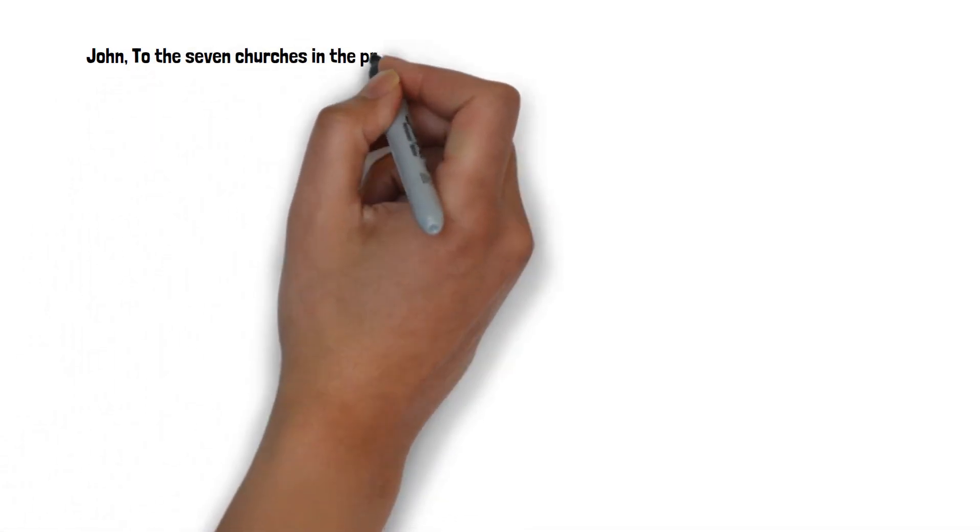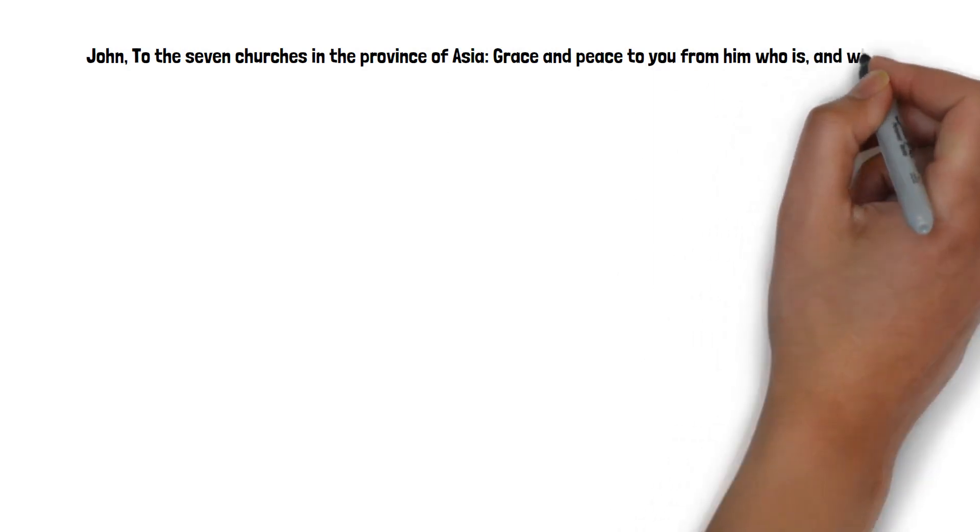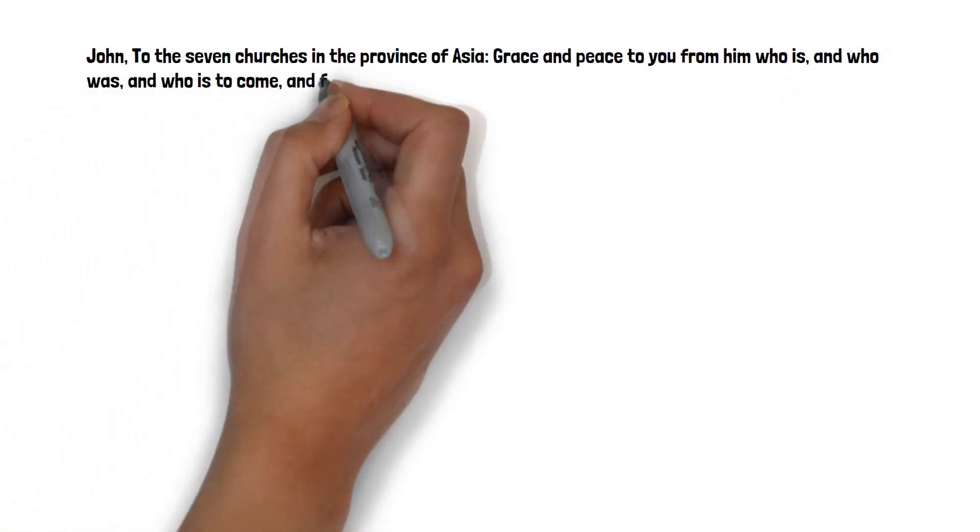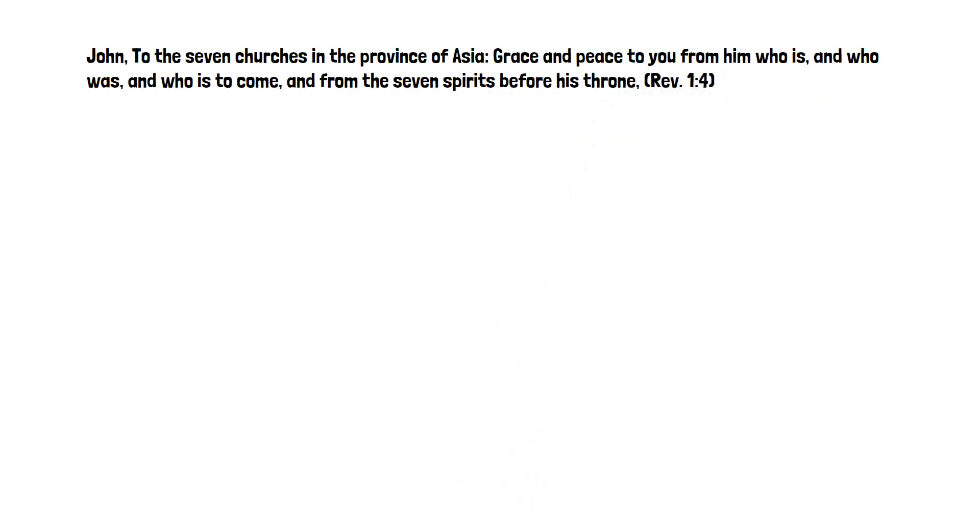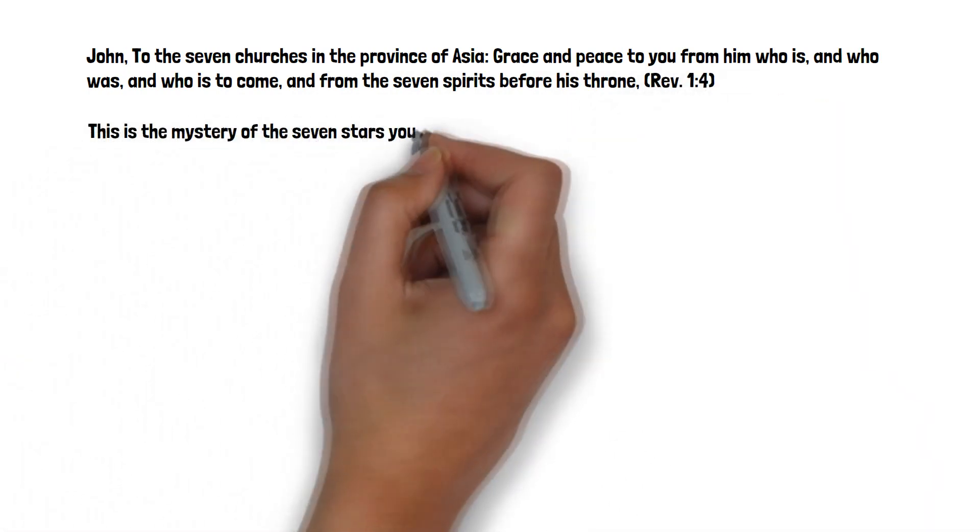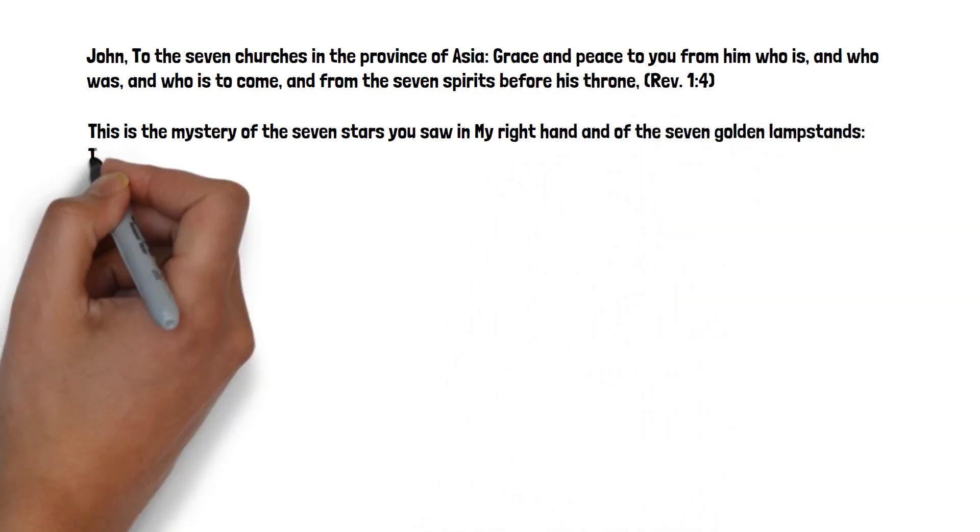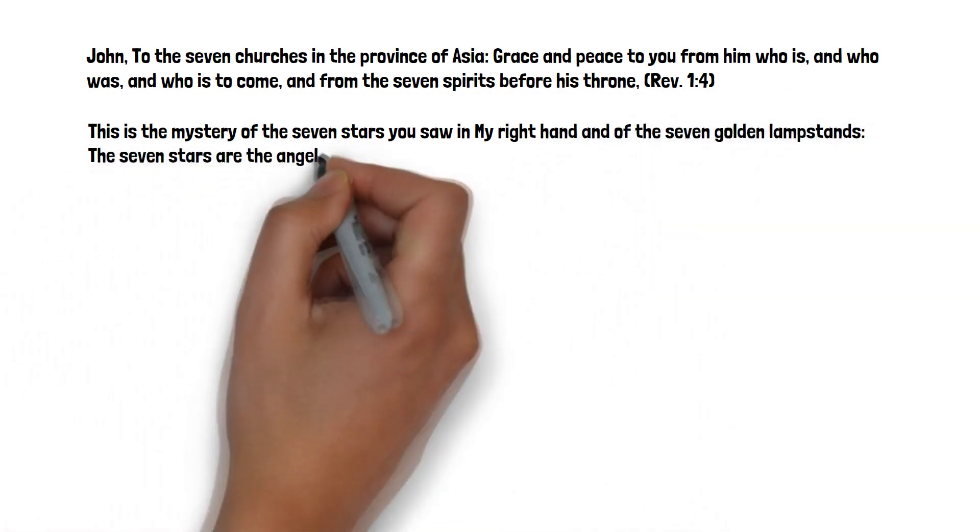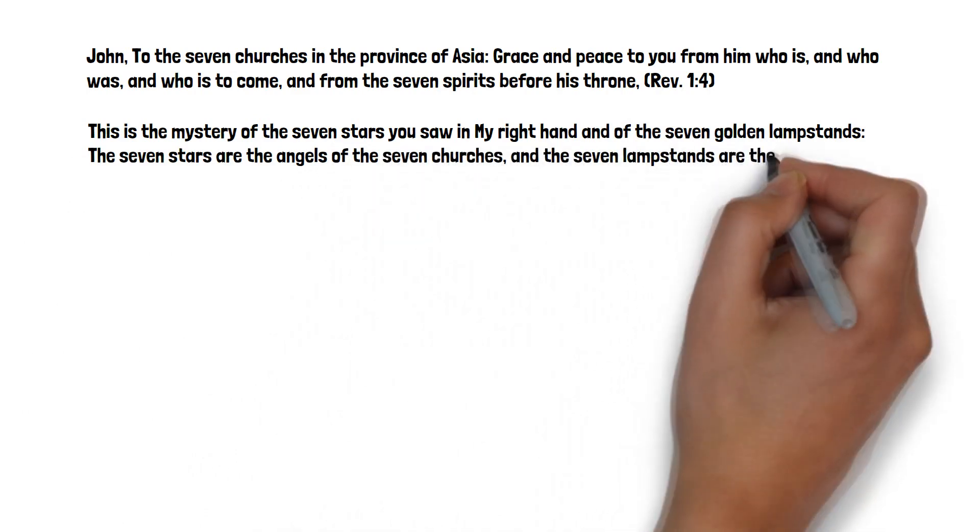Revelation 1:4 states: John, to the seven churches in the province of Asia, grace and peace to you from him who is and who was and who is to come, and from the seven spirits before his throne. Revelation 1:20 states: this is the mystery of the seven stars you saw in my right hand and of the golden lampstands. The seven stars are the angels of the seven churches, and the seven lampstands are the seven churches.